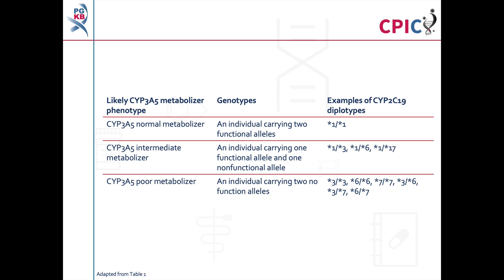As shown in this table and in table 1 of the guideline, in contrast to other drug metabolizing enzymes, CYP3A5 poor metabolizers are common in many populations. As an example, 80–85% of Caucasians are CYP3A5 poor metabolizers.